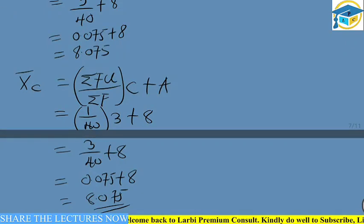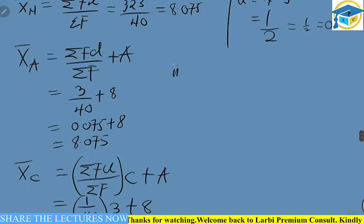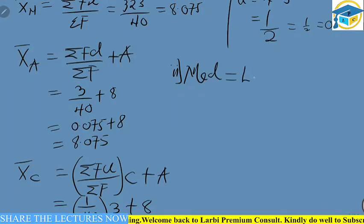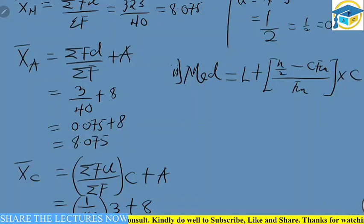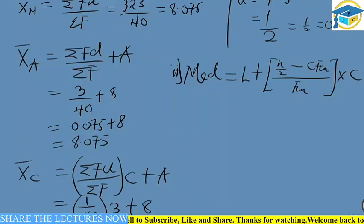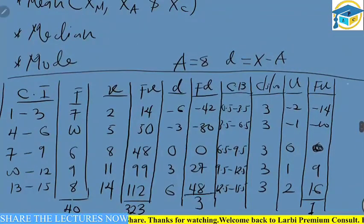Whether you use the coding method, the assumed mean method, or the normal mean, the values should be close. Now let's talk about the median. To find the median for grouped data, the formula is: median = L + [(n/2 − cfm) / fm] × c, where cfm is the cumulative frequency before the median class. We need a cumulative frequency column.